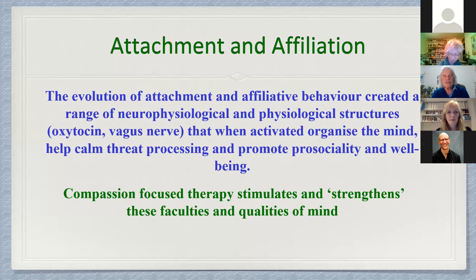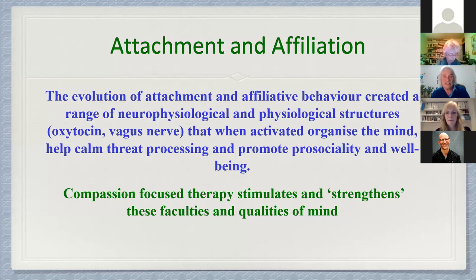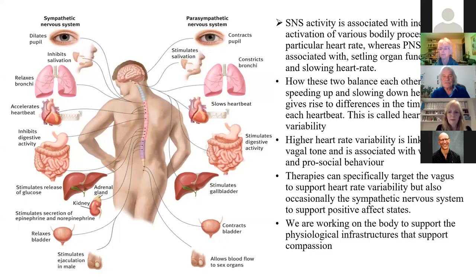The evolution of attachment and affiliative behavior came with a range of neurophysiological and physiological structures. We don't need to get too much into this, but we do need to be aware that compassion is rooted in basic brain systems. That's very important because if we don't stimulate those brain systems, then compassion may not arise.